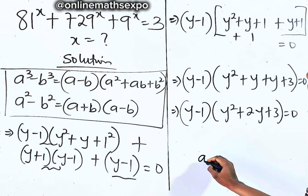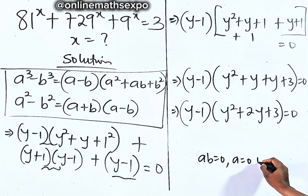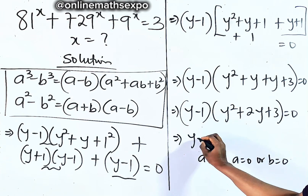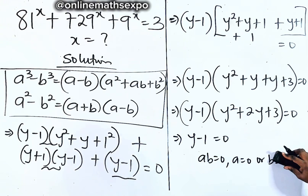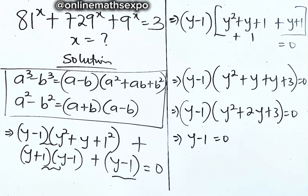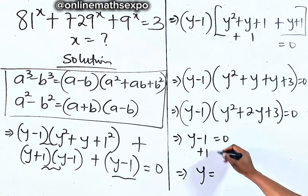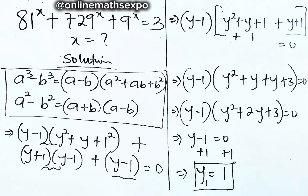Remember that for any product a times b equal to zero, either a is zero or b is zero. So either y minus 1 equals 0. Adding 1 to both sides gives us y equals 1. This is the first value of y.